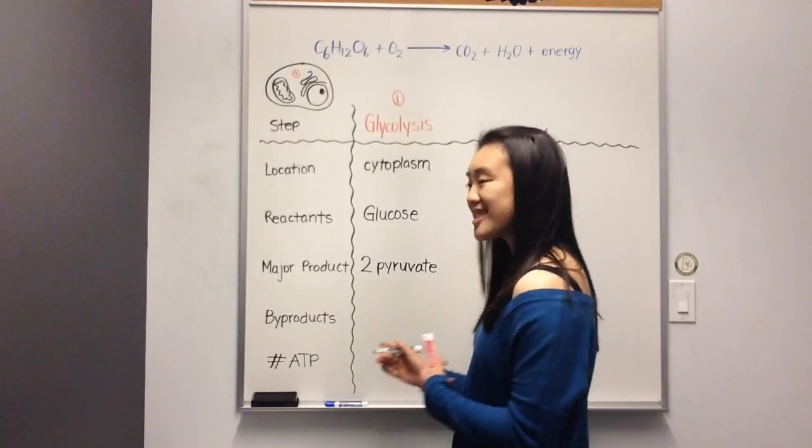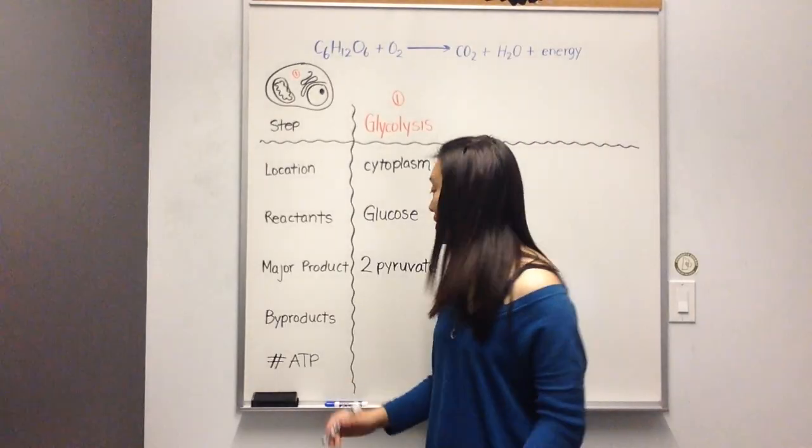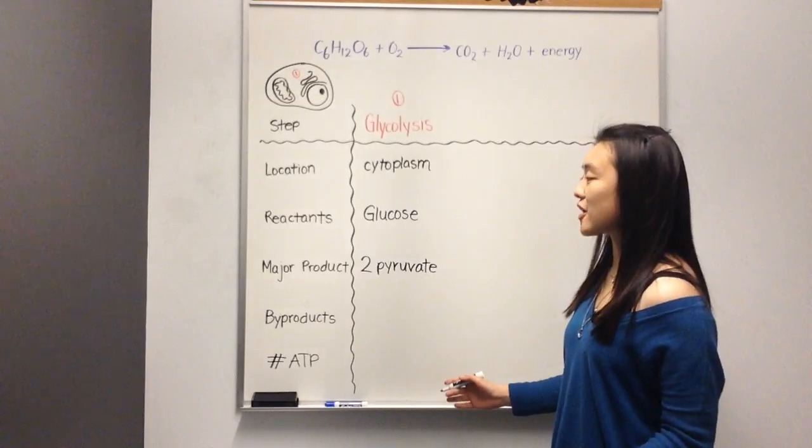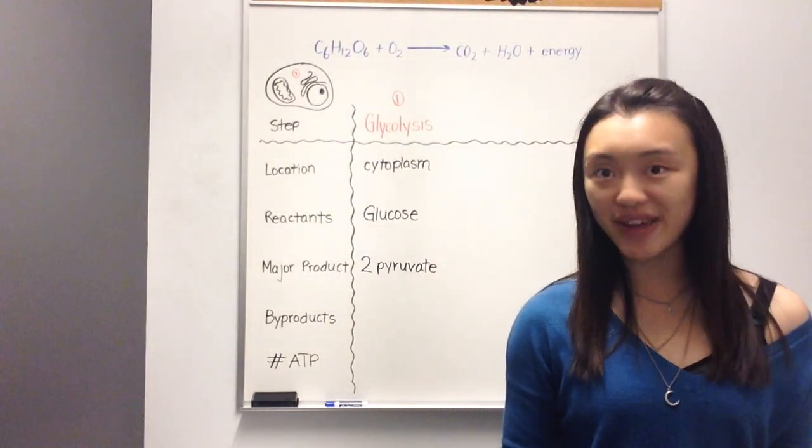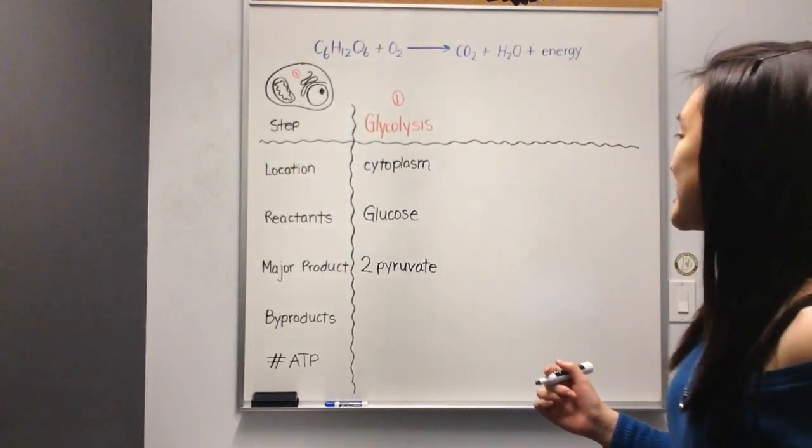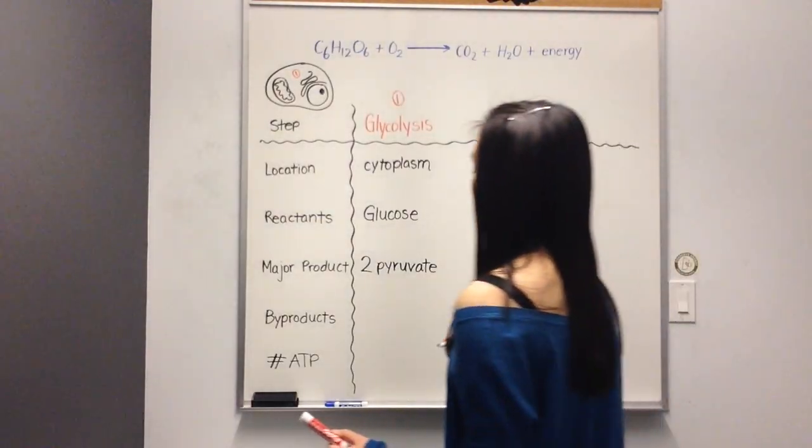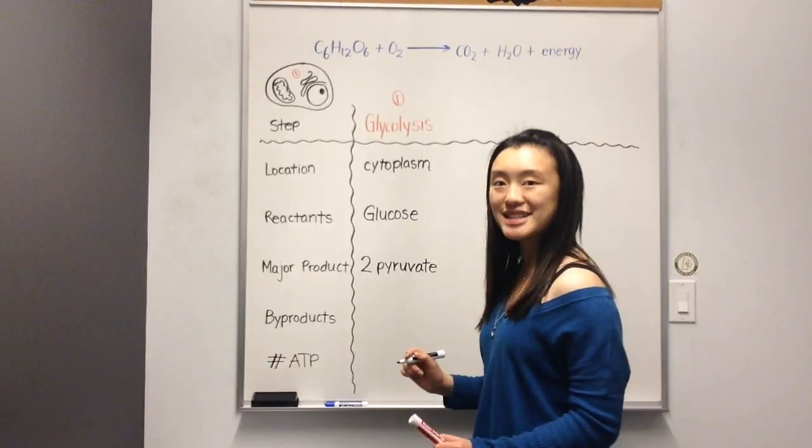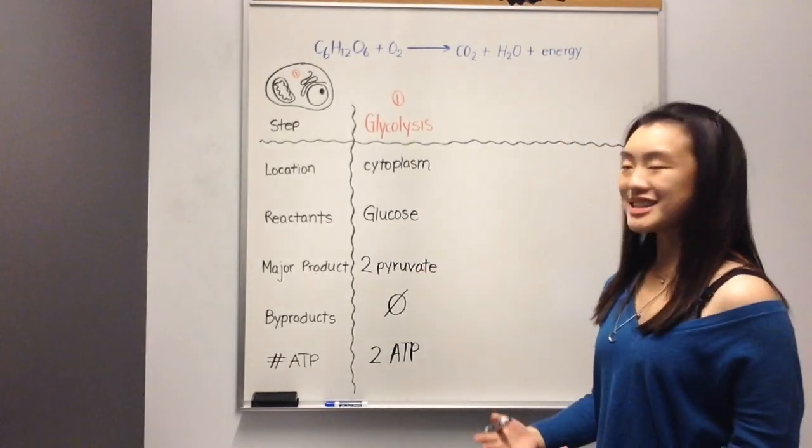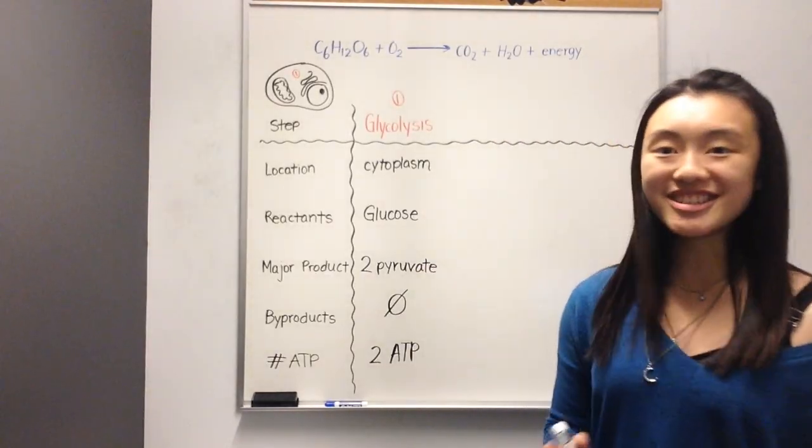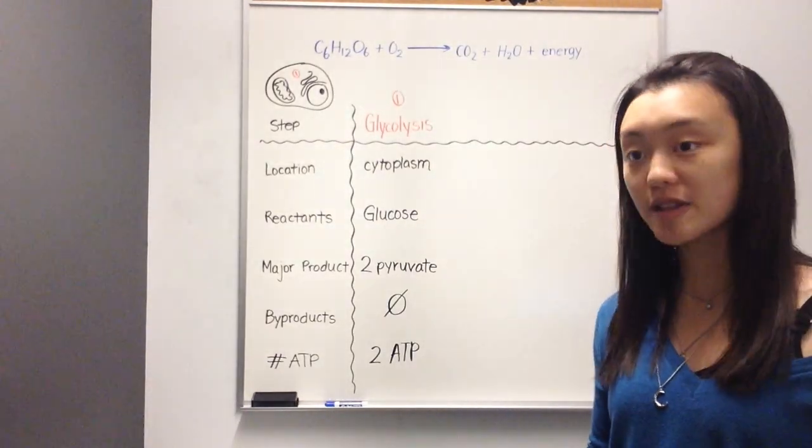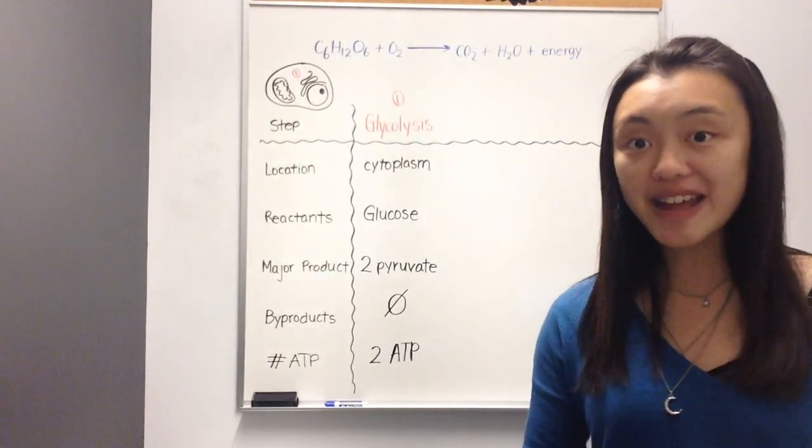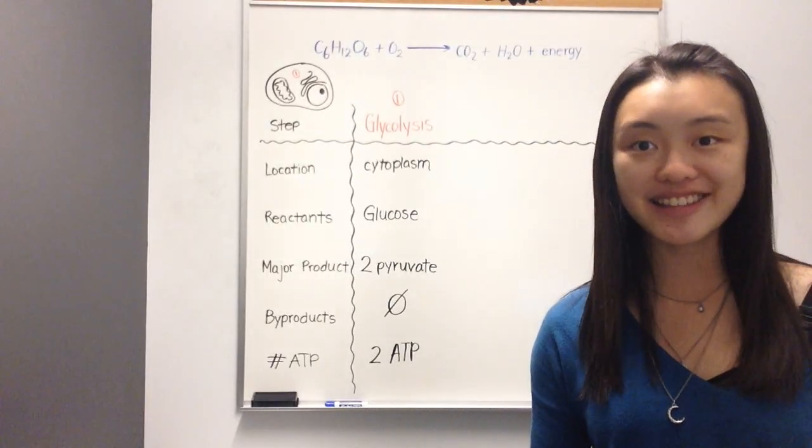However, we will yield some ATP. Unfortunately, glycolysis doesn't result in a lot of ATP, which means we can't perform glycolysis for too long, or rely on it too much for our source of energy. And the reason for that is because glycolysis only produces two molecules of ATP. Two molecules of ATP is really not a lot, which is why we need to perform various other steps during cellular respiration to give us the energy that we need to carry out our daily lives.